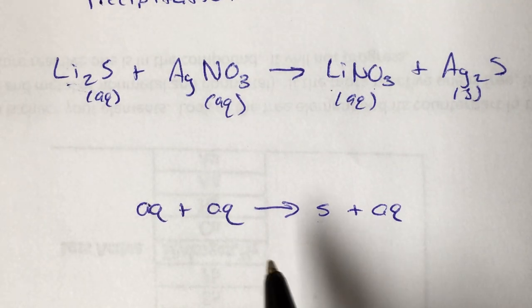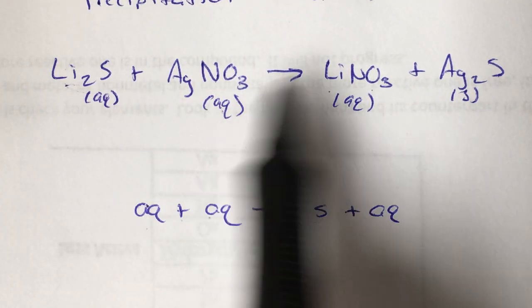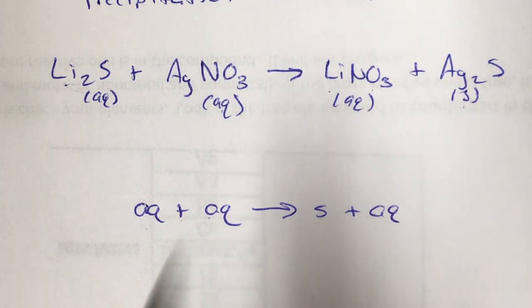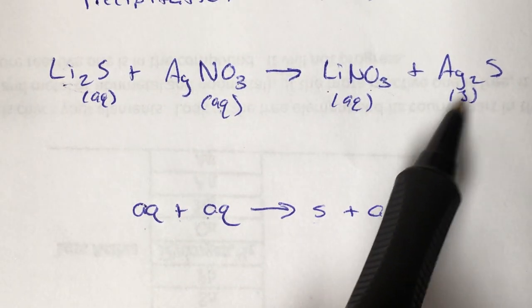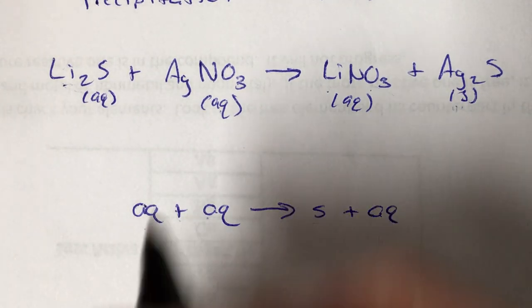So we look at our pattern here. Aqueous plus aqueous producing solid and aqueous. It doesn't matter what order those are in on the product side, as long as you have a solid there being produced by your two aqueous solutions. This is precipitation.